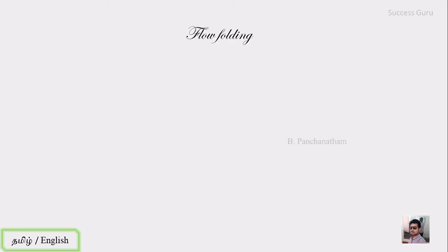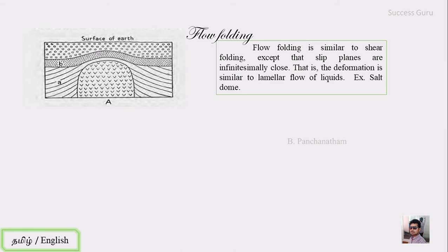The third type is flow folding. Flow folding is similar to shear folding, but the displacement planes are very close — infinitely close. If the deformation occurs in this way, there is a laminar flow of liquid or a metal flow. This is flow folding.